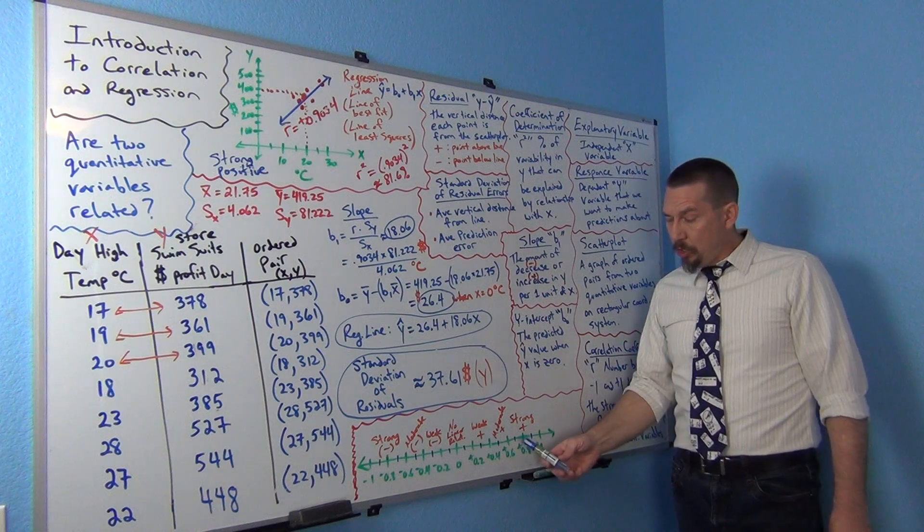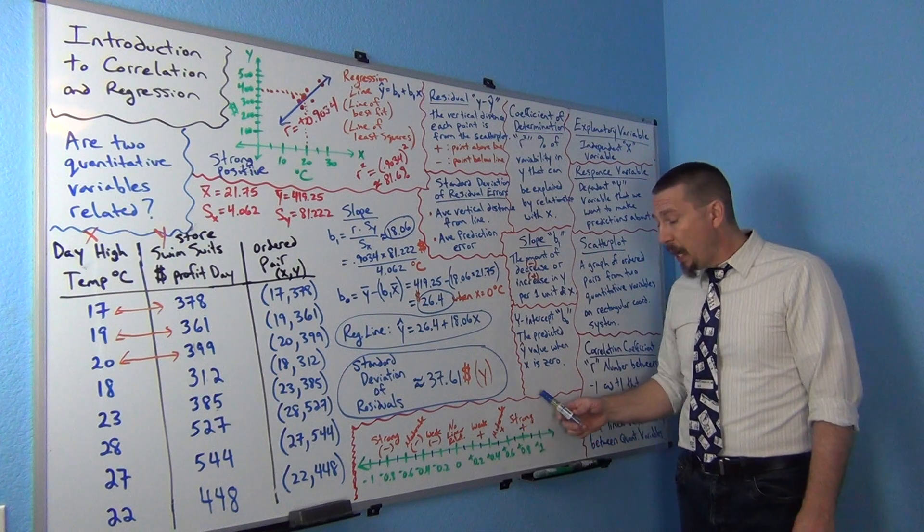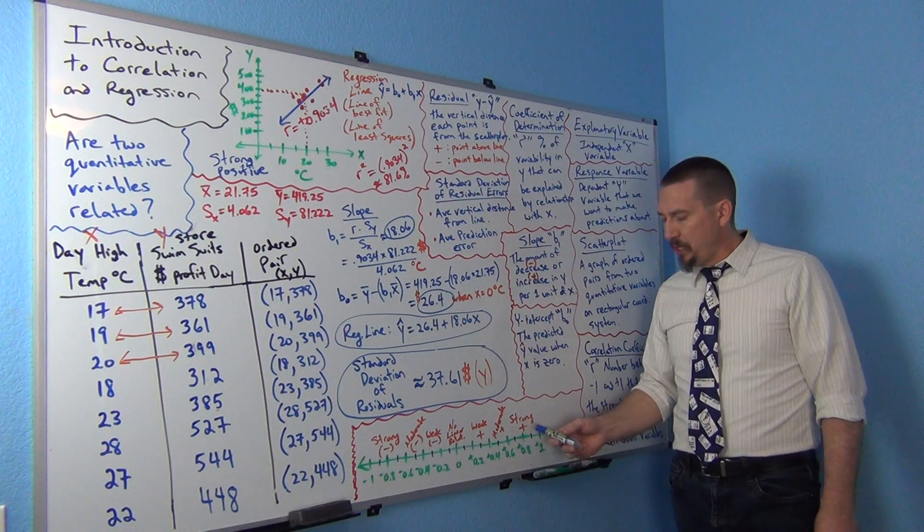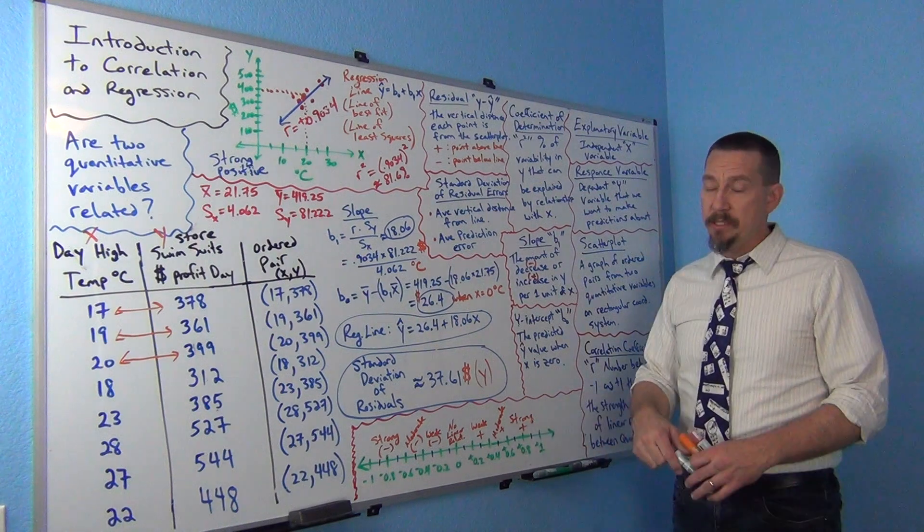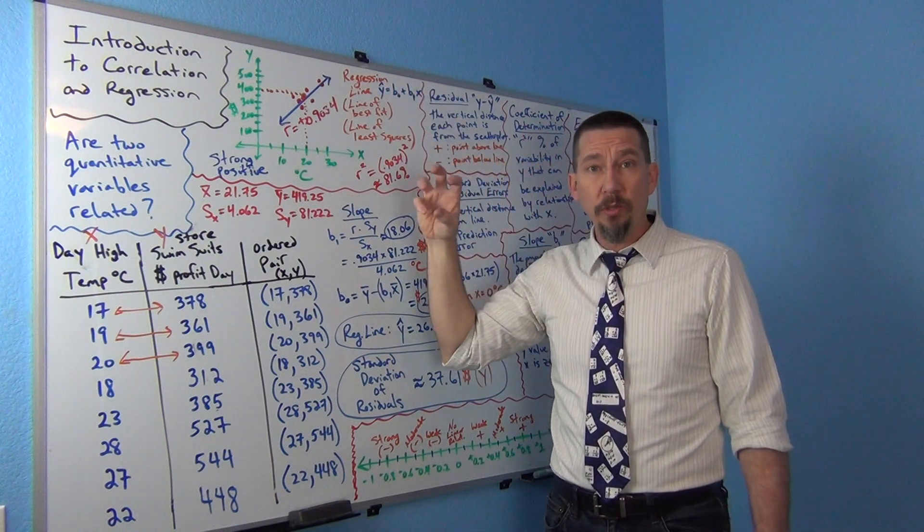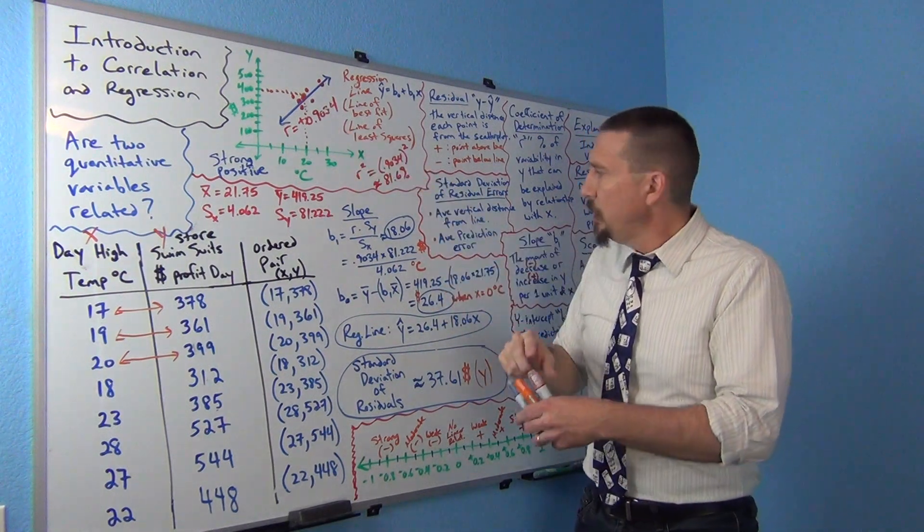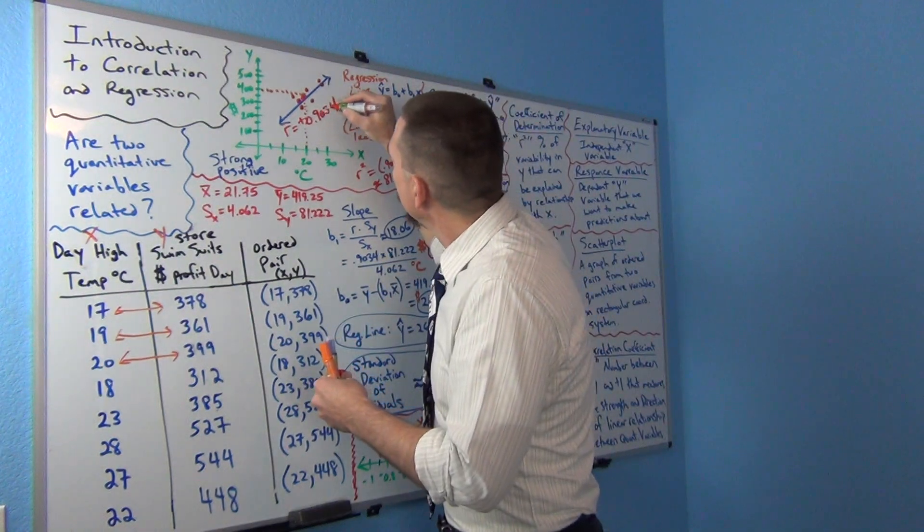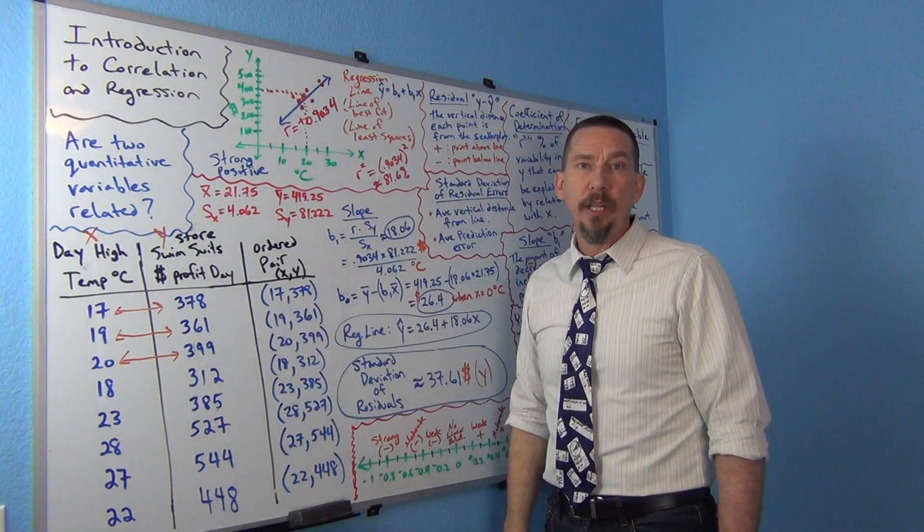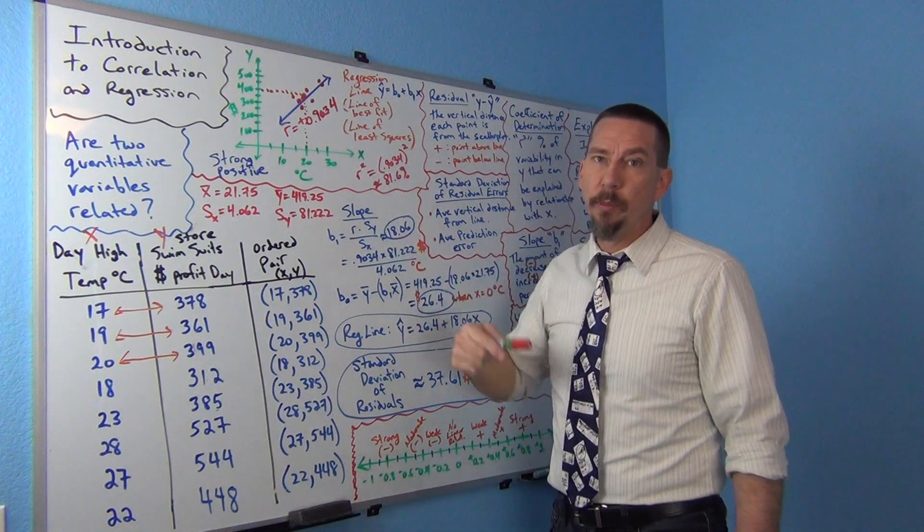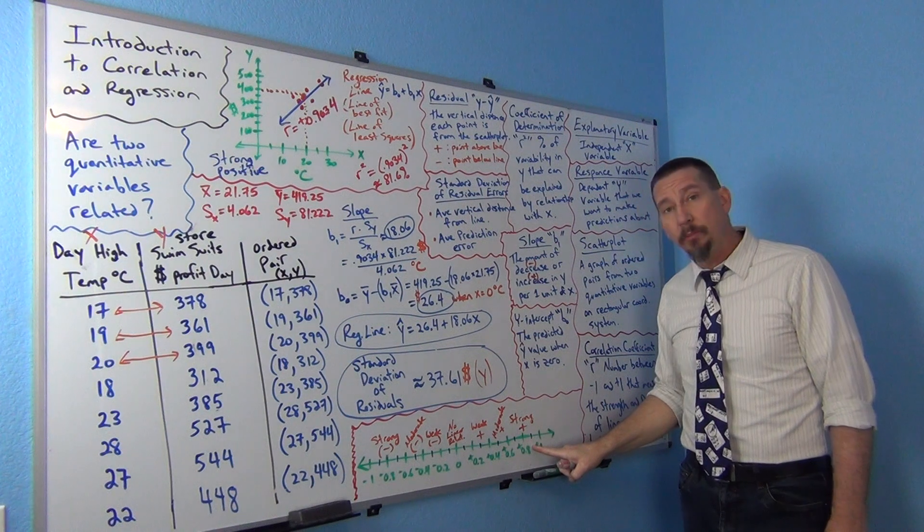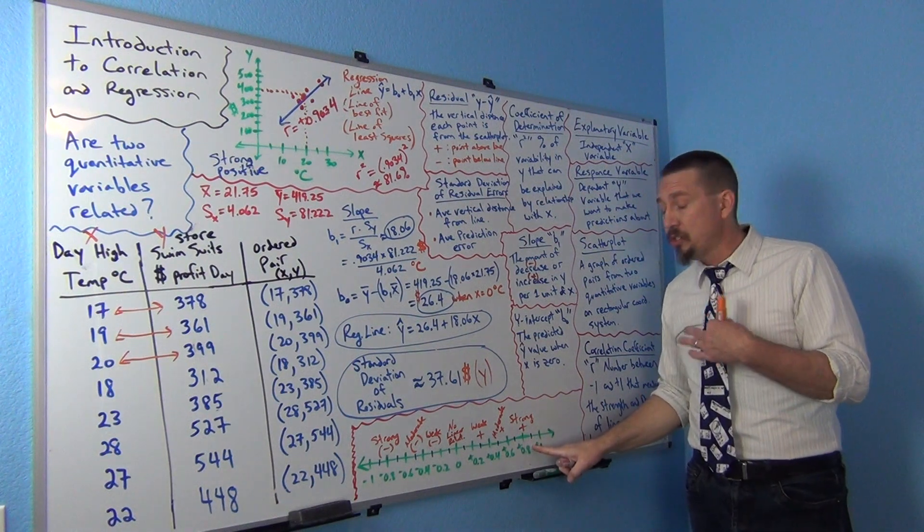If your R value getting closer and closer to positive 1, that would be a strong positive correlation. So that would mean like positive .6, positive .7, .8, .9, those are all strong positive. That means, kind of like this one, the line is going up from left to right. And the computer feels that the points are actually very close to the line. If you look at this one, it looks like the R value was .9034 here. 9034, and I got that off of Staccato. I put this data into Staccato and went to the correlation menu and had it calculated for me. So .9034, now where is .9 on the number line? You can kind of see it's really way over here next to positive 1. It's very close to positive 1. That means it's a very strong positive correlation.